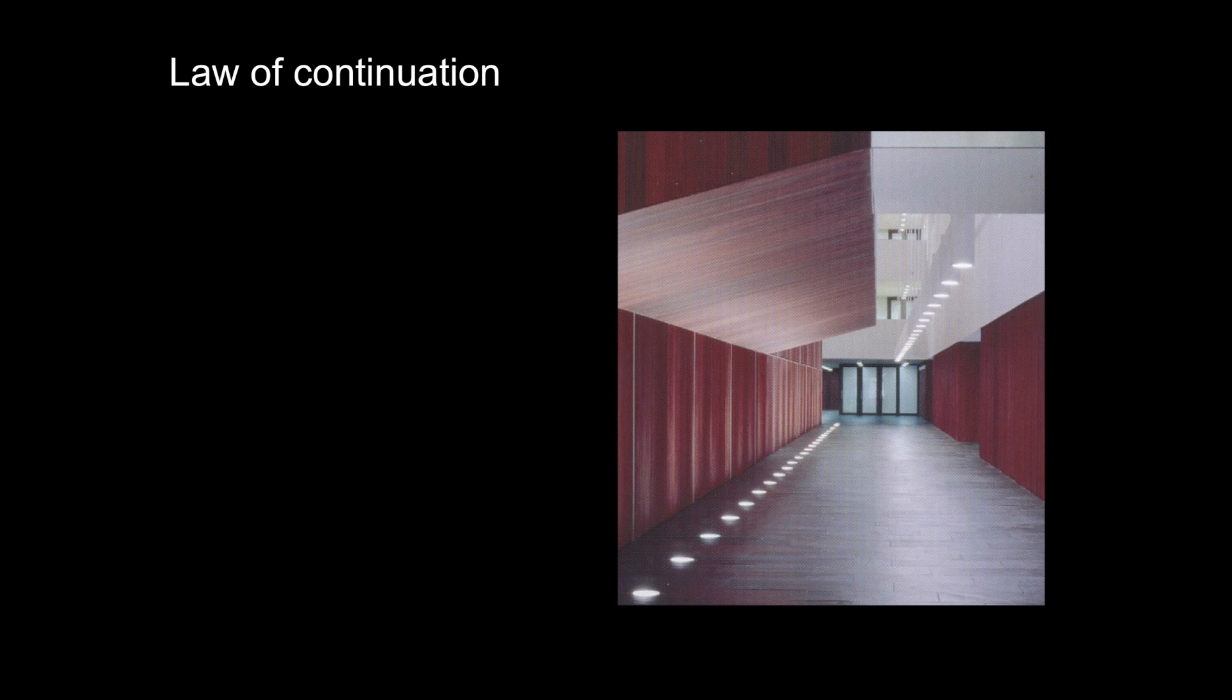Although a series of downlights and uplights provides even illumination to the floor and wall, we see them as a continuous row, emphasising the length of the corridor.